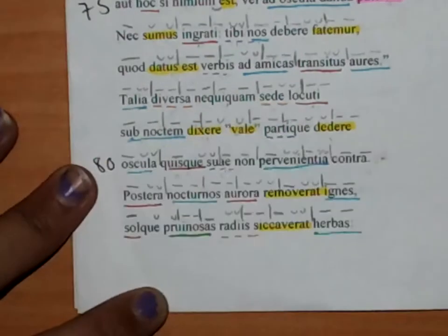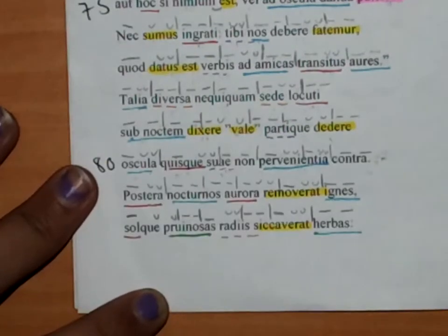Pyramus and Thisbe, picking up at line 81. Just before this part,